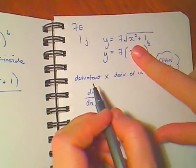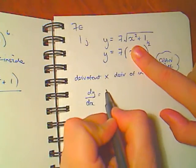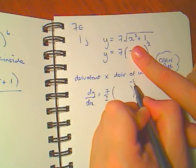So dy dx, derivative of the outside, I pretend that's one thing and I treat this like a power rule. So I get a half times 7, so that's 7 over 2, times what I have. Half minus 1 is minus a half.